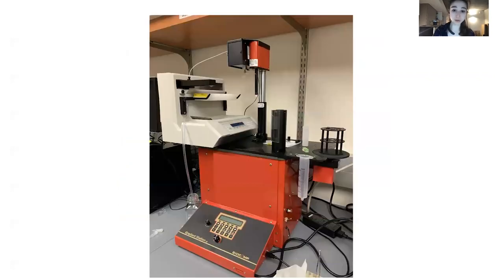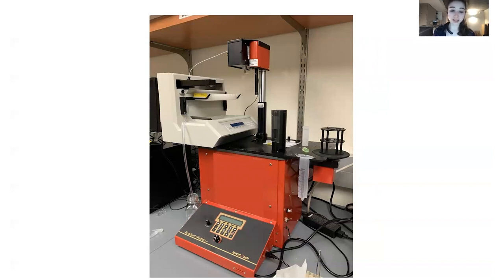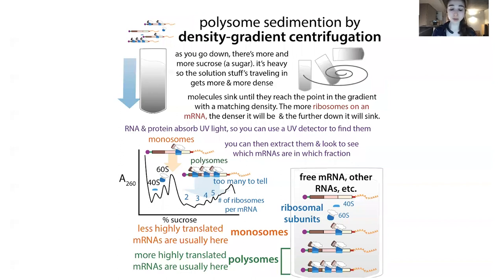This machine is pretty cool — we even had something similar in my old lab. It can make the gradient, spin these tubes really fast, and then fractionate — it'll suck the liquid out and send it through a UV detector. So you can actually see where the ribosomes are coming out and collect those fractions. You'll see different fractions corresponding to the different ribosomal species.